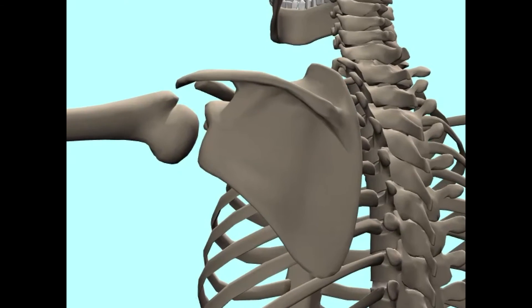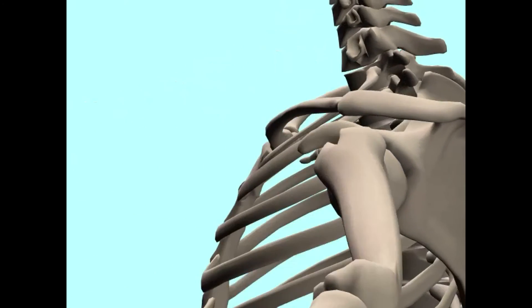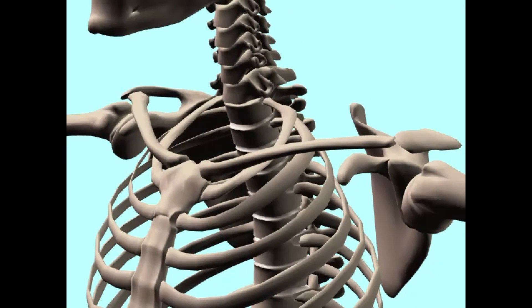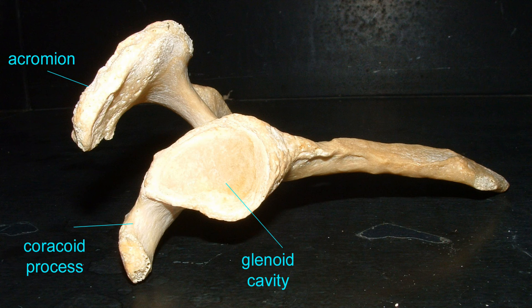The socket, where the head of the humerus articulates, is composed of the glenoid cavity, which comprises the lateral angle of the scapula, and then the acromion, which is continuous with the spine of the scapula, and the coracoid process.